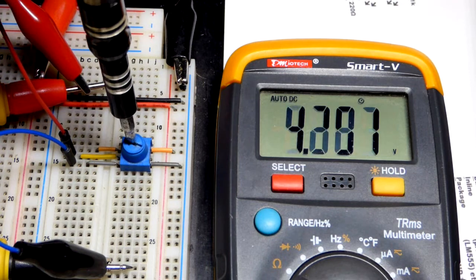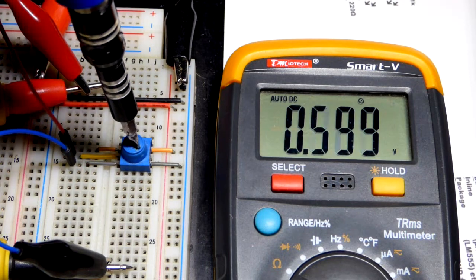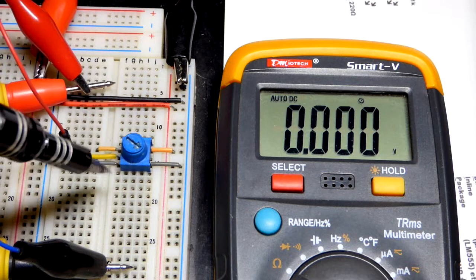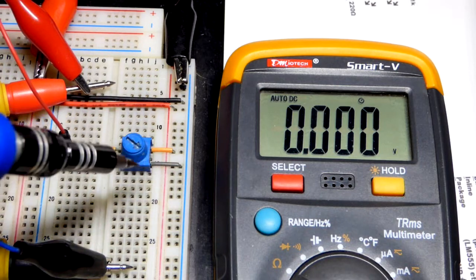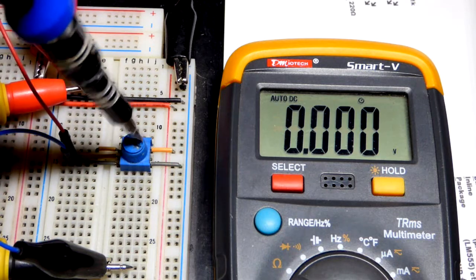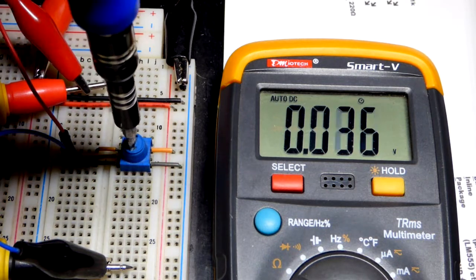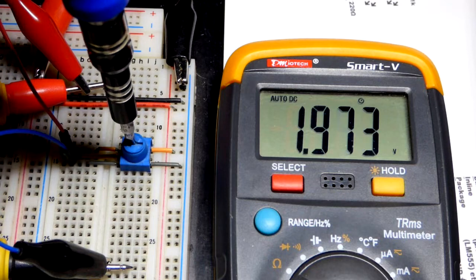Or we can go all the way down to no voltage. So now the wiper is connected to the negative supply right there, as is our ground terminal. So there's no voltage difference. They're making the same connection. Or we could go anywhere in between that we want.